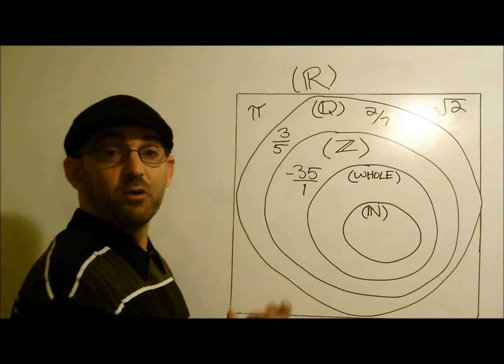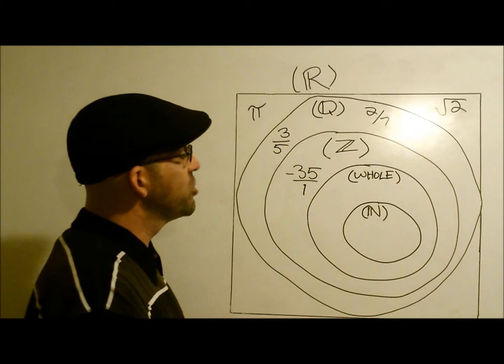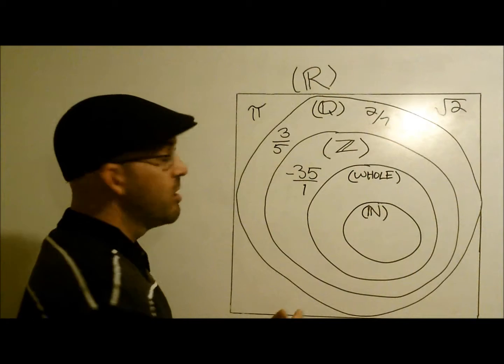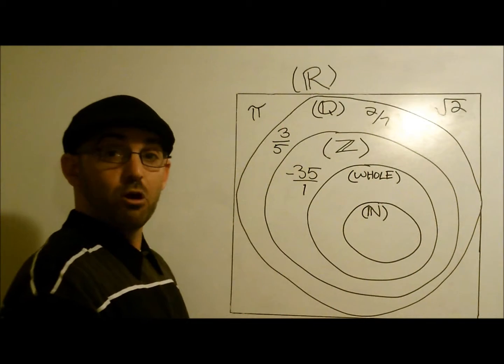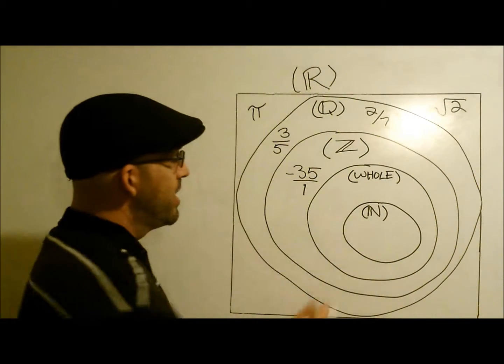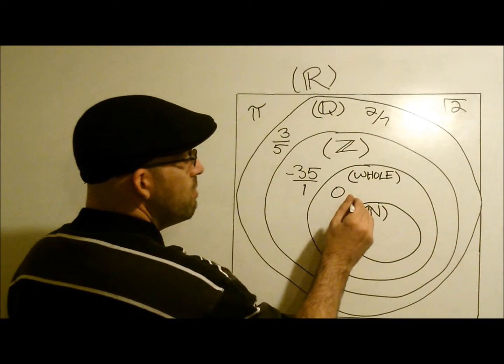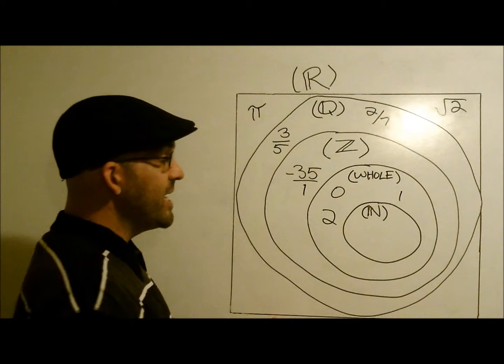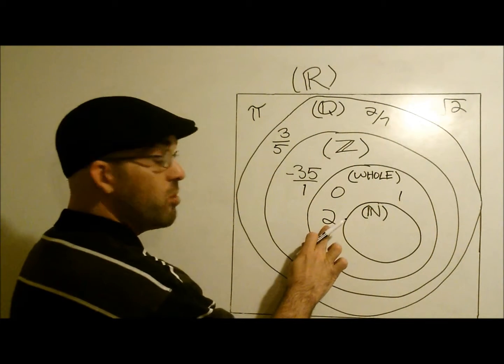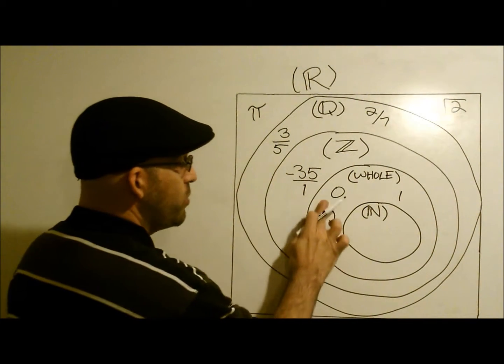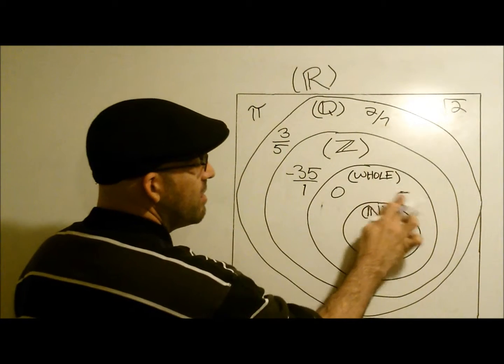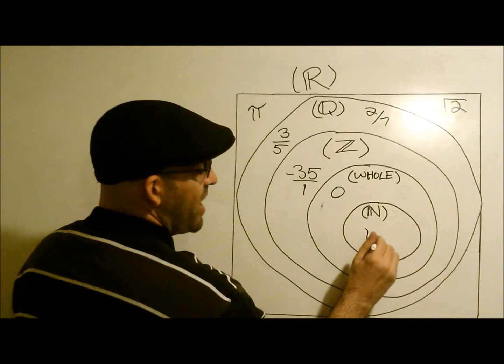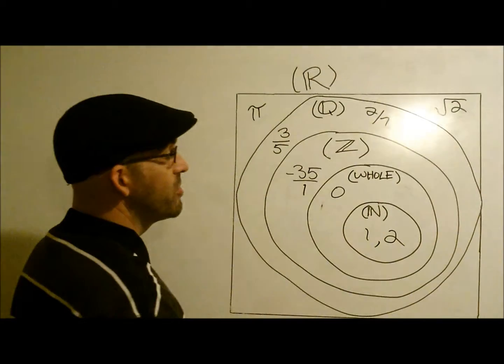Whole numbers. Well, we know those are 0 plus all the natural numbers, right? Such as 0, 1, 2, but wait a second, 1 and 2 are also natural numbers. So we need to erase these here and stick them right here inside the natural numbers.